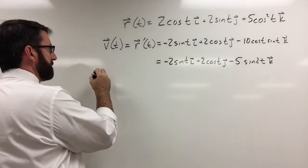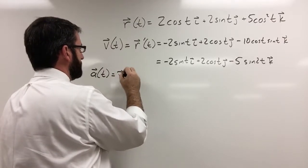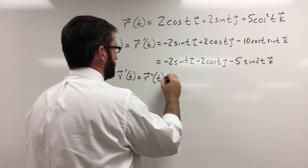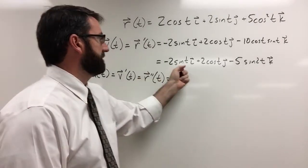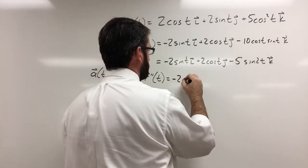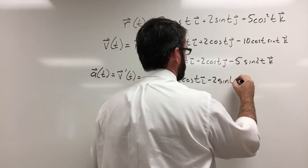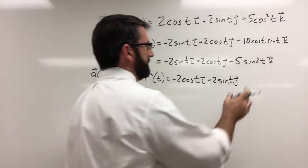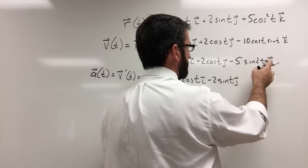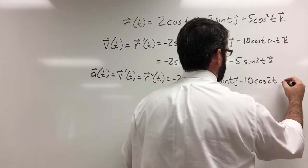The acceleration vector is going to be the derivative of the velocity vector, which is the second derivative of the position vector. So we take the derivative of this, and that's going to give us our acceleration. The derivative of sine is cosine, so this is negative 2 cosine of t i minus 2 sine t j. And then for the last component, we've got cosine but we have to multiply by 2, so it's going to be negative 10 cosine of 2t k.